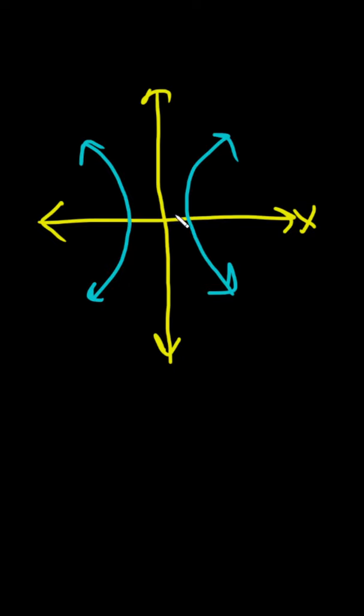Determine if this graph is a function. So basically we're going to use something called the vertical line test. The vertical line test says if you can draw a vertical line and it crosses your graph more than once, then it's not a function.